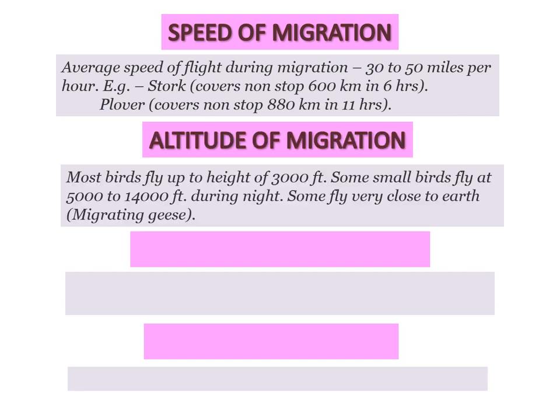Altitude of migration: most birds fly up to a height of 3,000 feet. Some small birds fly at 5,000 to 14,000 feet during the night. Some fly very close to the earth — for example, migratory geese.